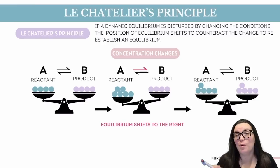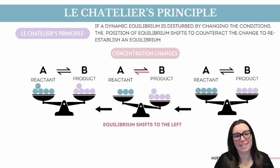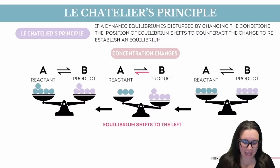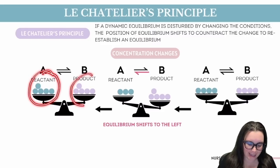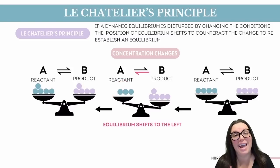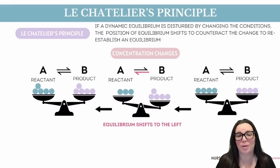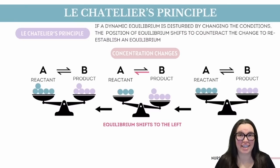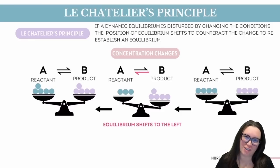Conversely, if we add more products, the equilibrium is going to shift to the left. Another example of stress is when we remove one of the components. As you can see from our example, we have an equal amount of reactants and an equal amount of products. However, if we remove a couple of those reactants, the system is going to respond by shifting the reaction to produce more of that missing component, aiming to restore balance. These adjustments illustrate how Le Chatelier's principle works to keep the system at equilibrium even when we introduce changes.